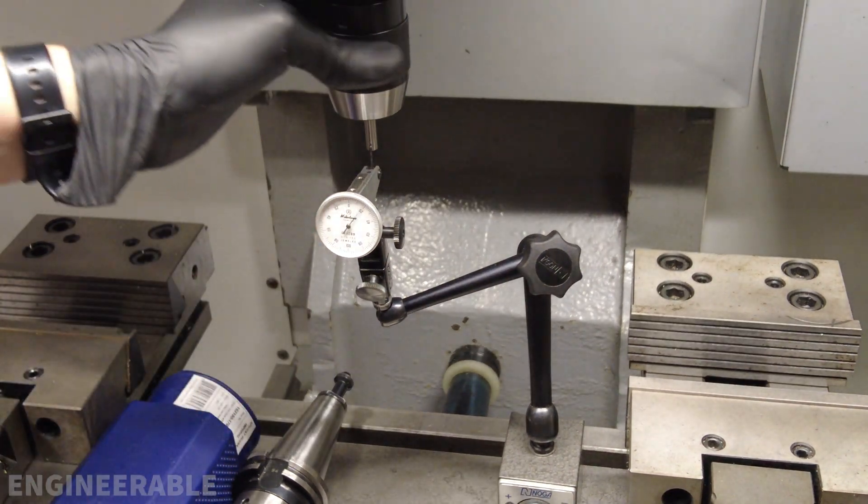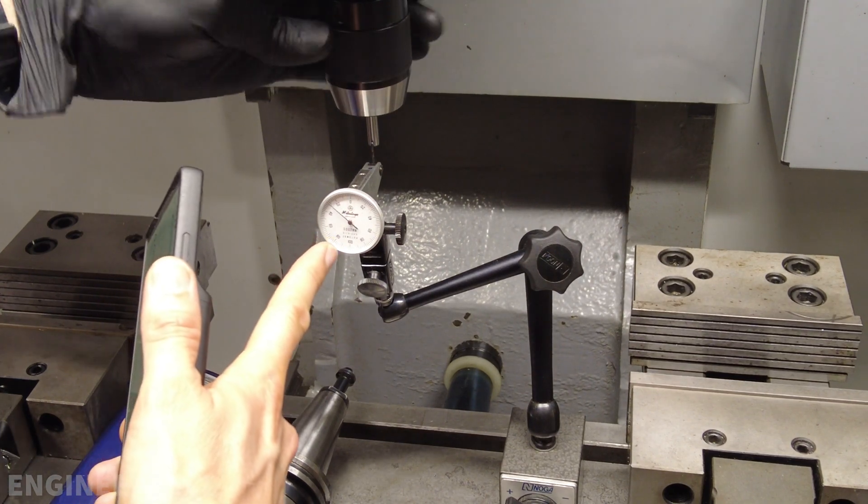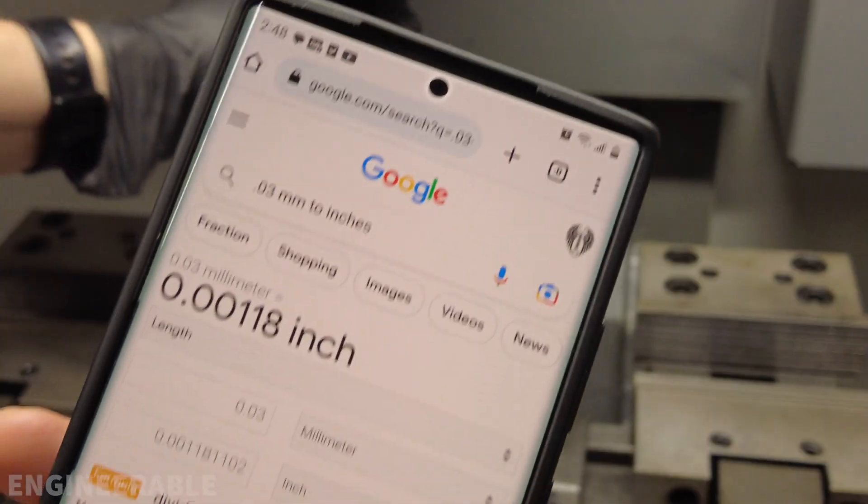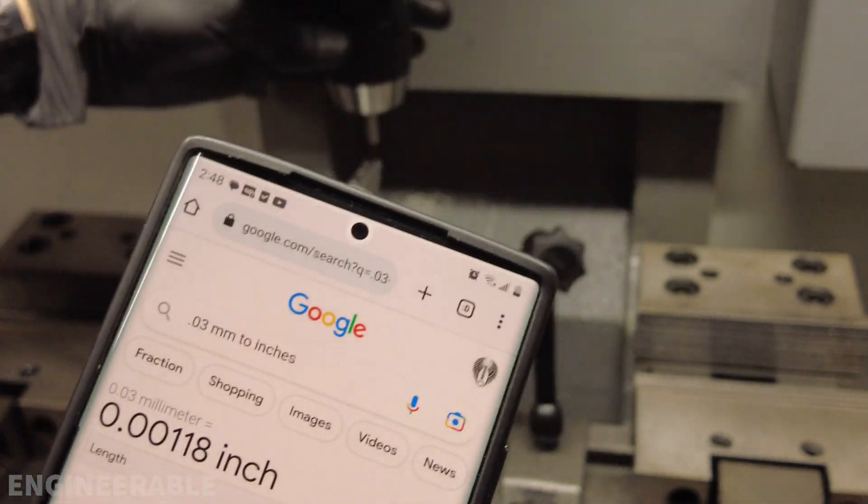I flipped the gauge pin over. I'm still getting the same results. The max run-out that I managed to get was plus or minus 0.03 millimeters, which is plus or minus 1.18 thousandths of an inch, which is still very good.